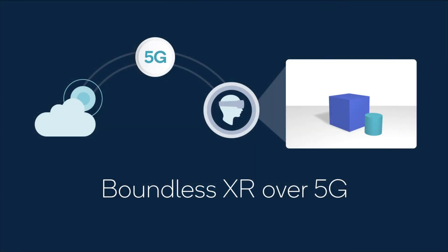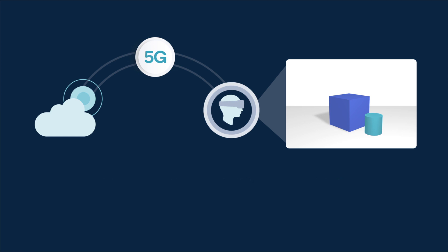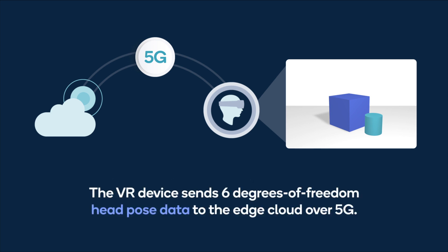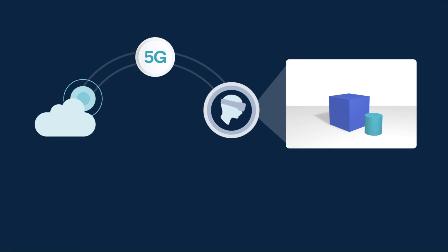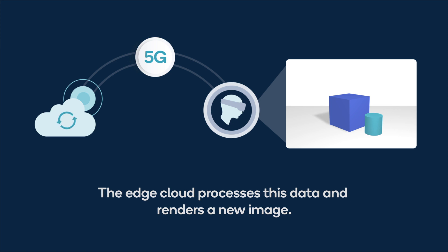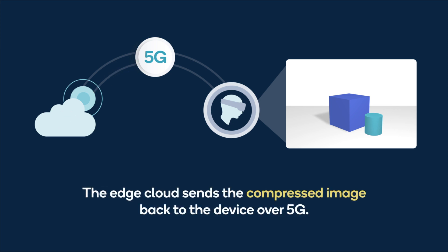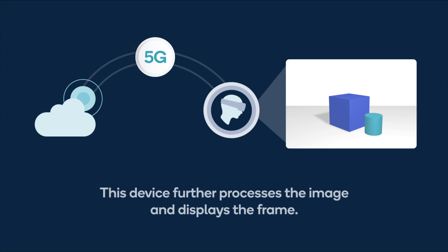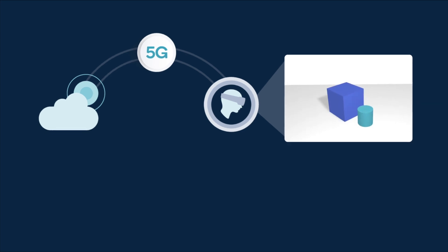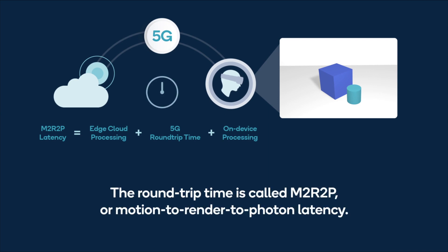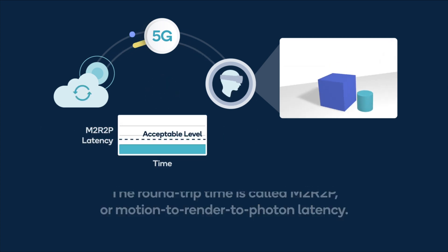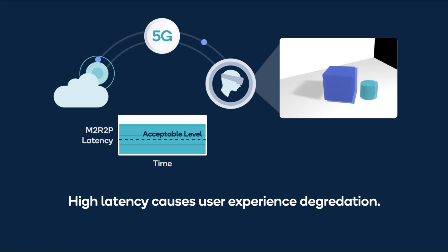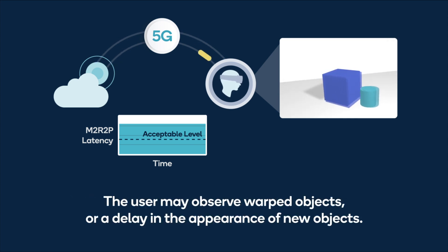We now illustrate the processes involved in a boundless VR system. The VR device sends six degrees of freedom head pose data to the edge cloud over 5G. The edge cloud processes this data, renders a new image, and then sends the compressed image back to the device over 5G. The device further processes the image before displaying it. The time taken for this roundtrip process is called M2R2P, or motion to render to photon latency. The 5G roundtrip time is a key component of M2R2P. High latency causes user experience degradation — the user may observe warped objects or delays in the appearance of new objects.